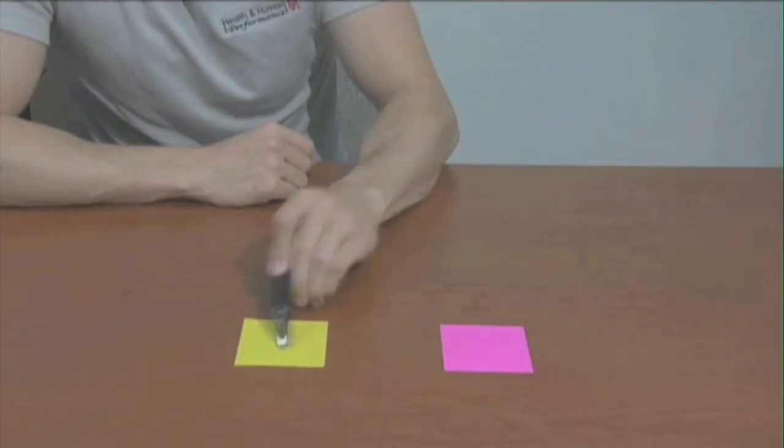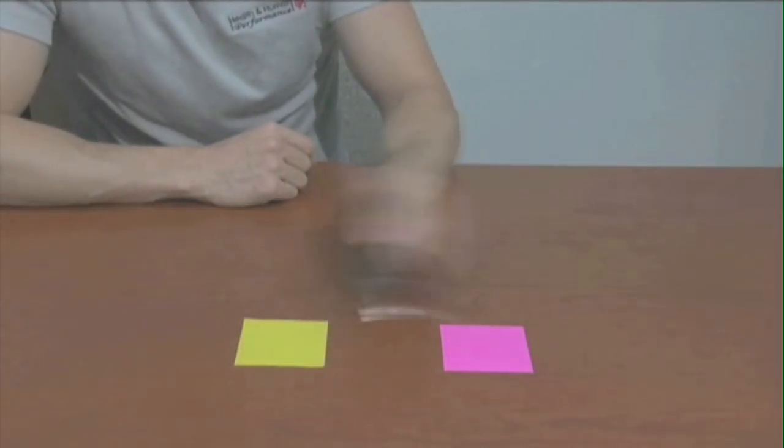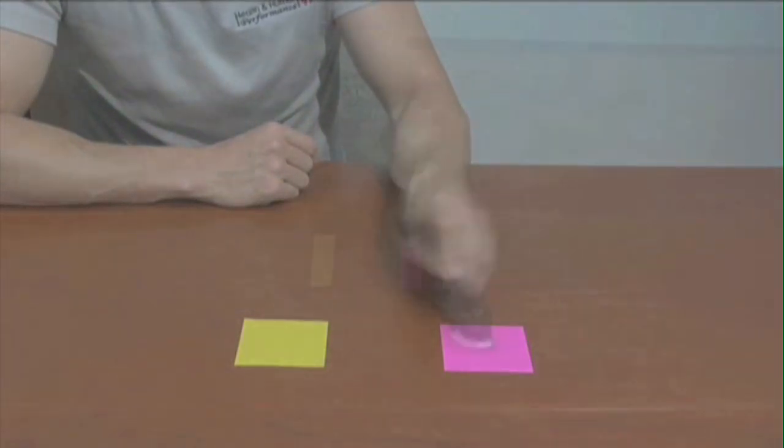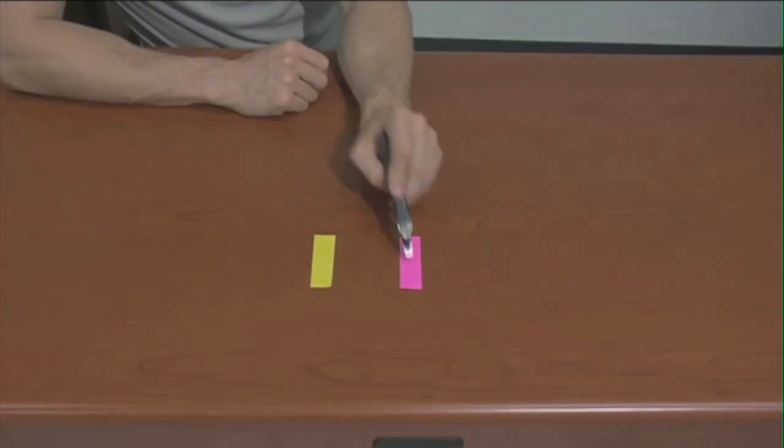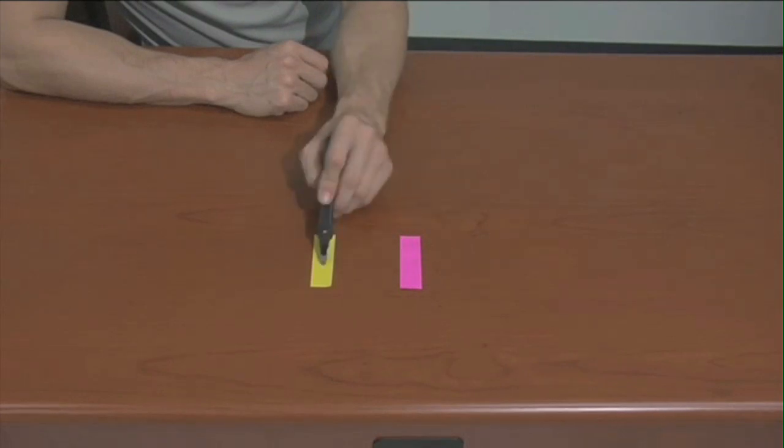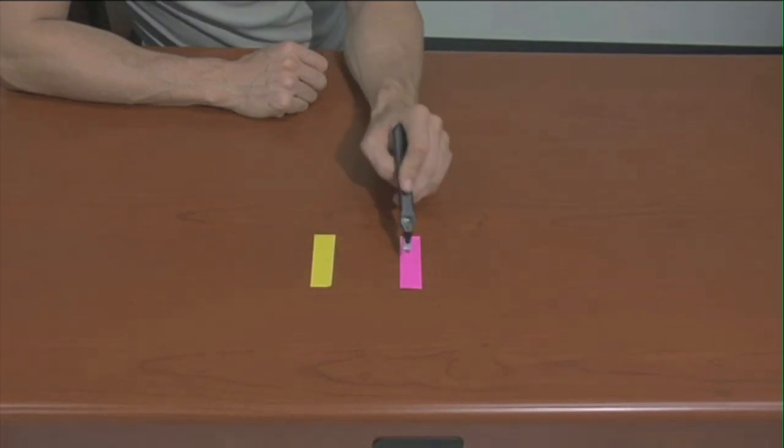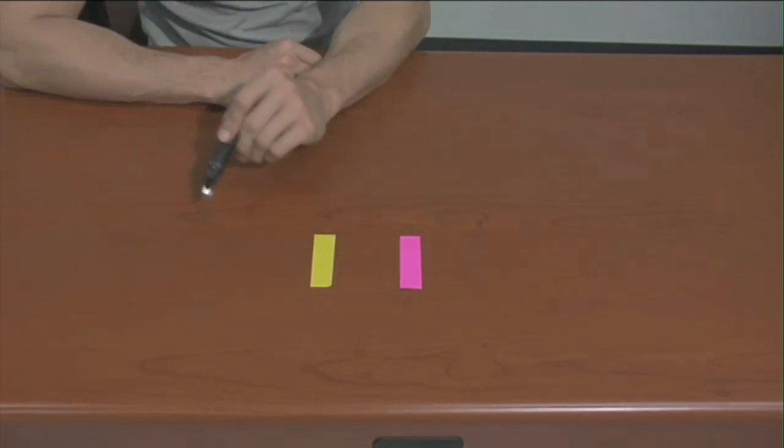In the video, you see that our subject can move quickly between targets when the target is relatively large. However, when the target decreases in size, our subject can either slow down to maintain accuracy or maintain the same speed but will make more errors according to Fitts' Law. Obviously, errors in this case means missing the target with the head of the pen.